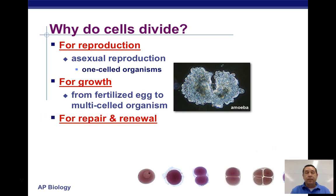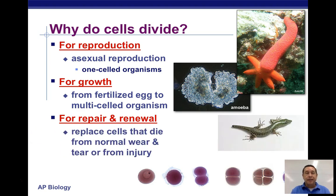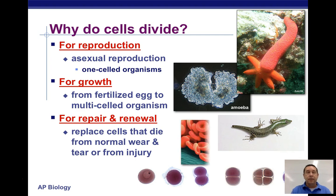For repair and renewal: when cells need to repair or replace cells that have died off, worn out, or been injured — for example, a broken bone — you've got to replace the damaged cells, and that involves cell division through mitosis.